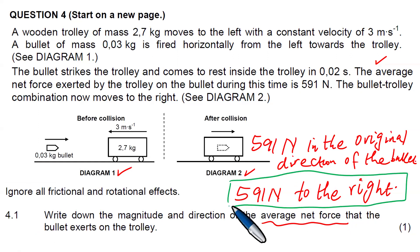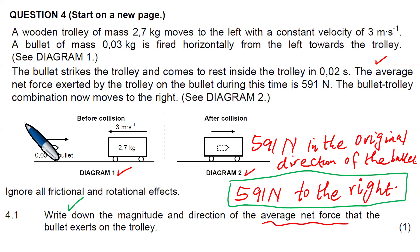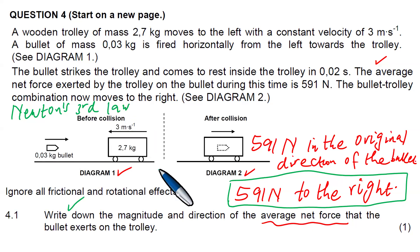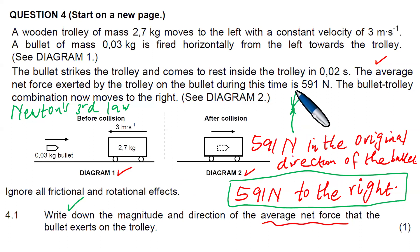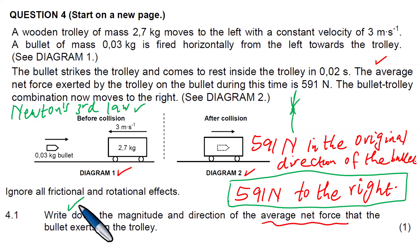This is due to Newton's third law of motion, which is clear about action-reaction pairs of forces. If you are sitting on a chair, the force you exert on the chair is equal in magnitude but opposite in direction. Similarly, when the bullet strikes the trolley, the forces are equal in magnitude but opposite in direction — hence we can write down the magnitude and direction of the average net force that the bullet exerts on the trolley.